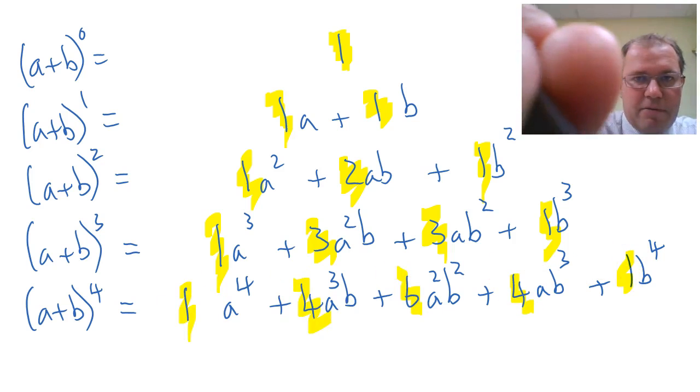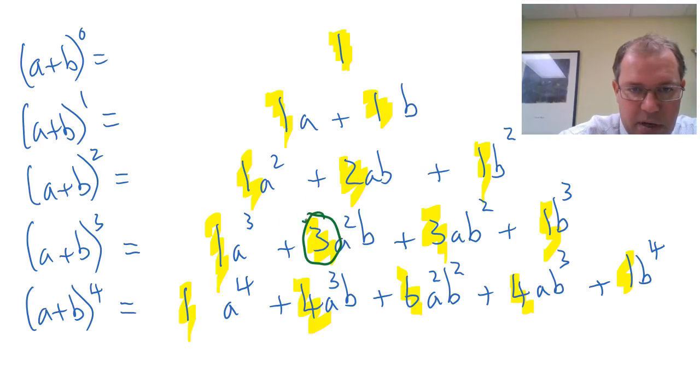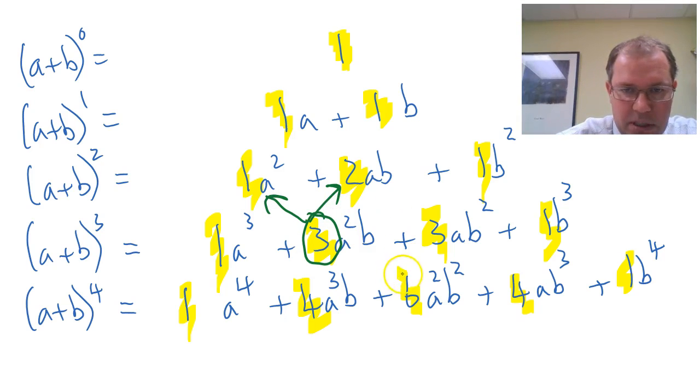So if we take, for example, the number 3 here, the number 3 is 1 added to the 2. If we take the number 6 here, the number 6 is 3 added to 3. And so we can write down very quickly the numbers for Pascal's triangle.